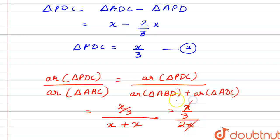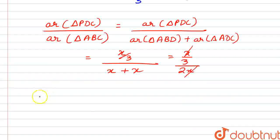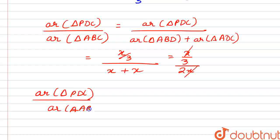Here the X values cancel out, and this becomes 1/3 times 1/2. So we have area of triangle PDC upon area of triangle ABC as 1/6, and we can write it as 1:6.